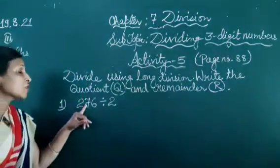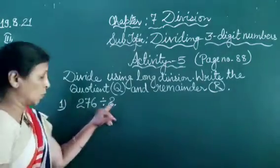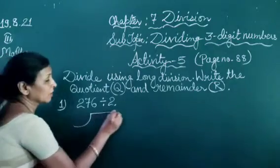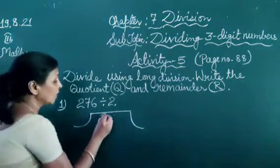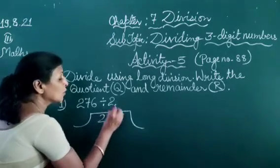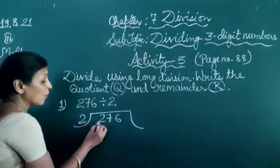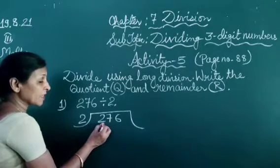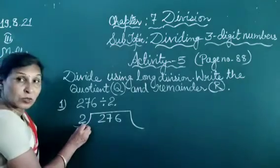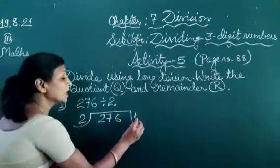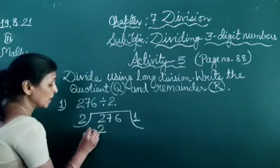First, 276 is divided by 2. Now we divide it. 276 is the dividend — we write it here — and 2 is the divisor, we write here. Now first we see the single digit, which is equal to the divisor. So 1 time it goes: 2 ones are 2, we write here.